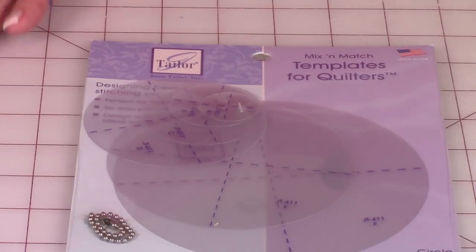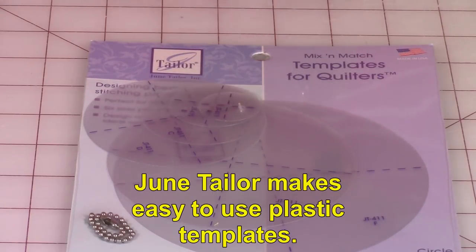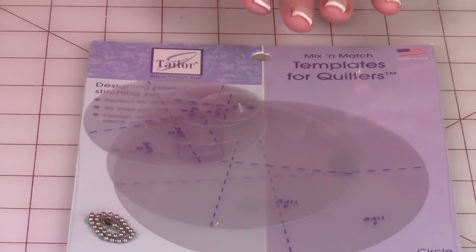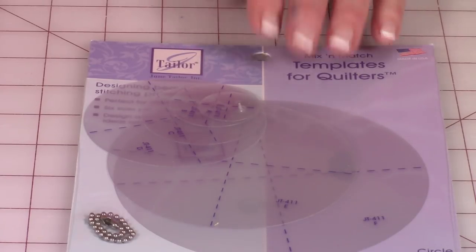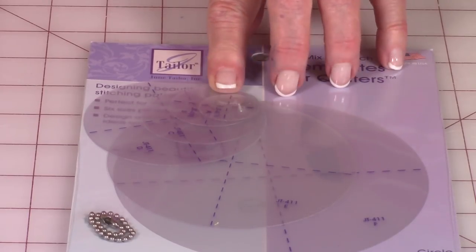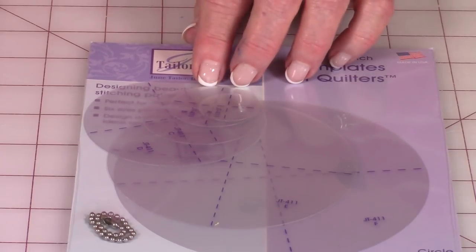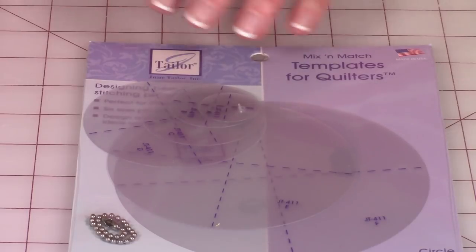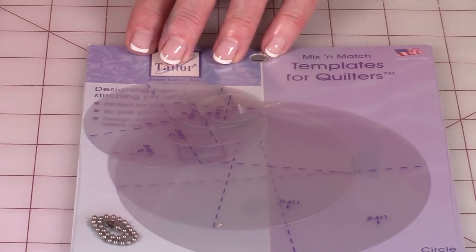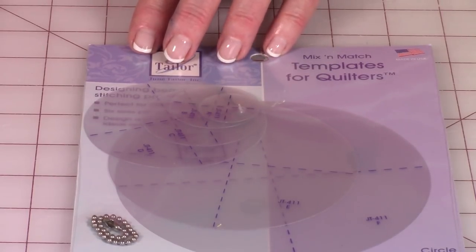This is a company, it's called June Taylor, that makes templates. If you can afford it, I would buy these little circle templates. I think they go from five inch down to one inch circles. You'd be surprised how often you could use these little circle templates if you like to do a lot of applique stitching.